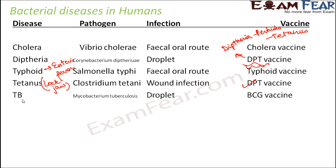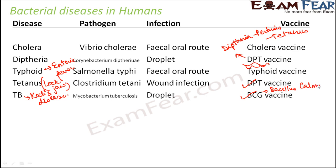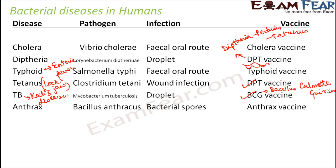Tuberculosis, also known as Koch's disease after the scientist Koch, is caused by Mycobacterium tuberculosis and spreads through droplet infection. The vaccine used for tuberculosis is the BCG vaccine — BCG stands for Bacillus Calmette-Guérin. Anthrax is caused by Bacillus anthracis, the infection spreads through the spores of this bacteria, and an anthrax vaccine is available.